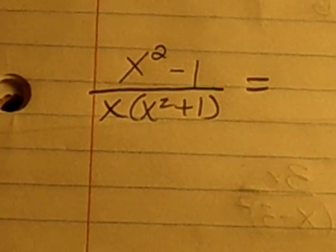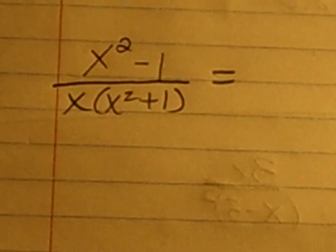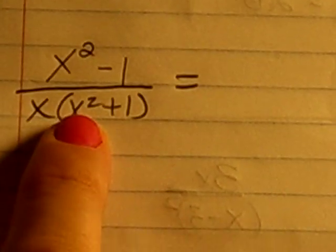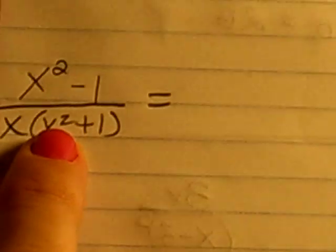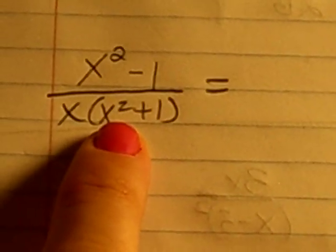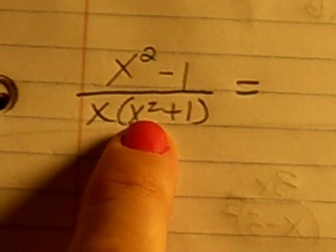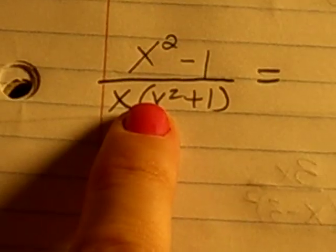This is a video for the other type of partial fraction decomposition. This one has in the denominator both a linear term and a quadratic term. This quadratic term, however, cannot be reduced, so it's going to stay a quadratic term, whereas in the last video I was able to factor the quadratic into two linear terms. So this is a different setup.